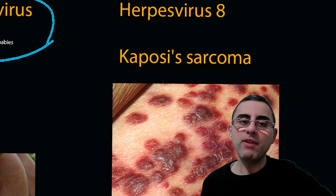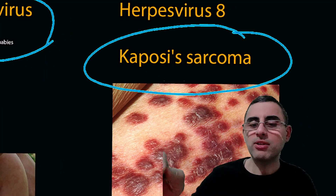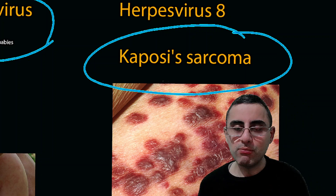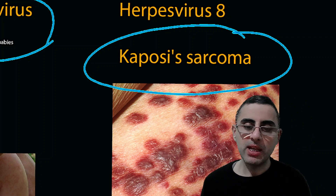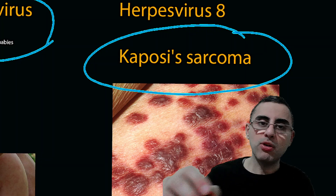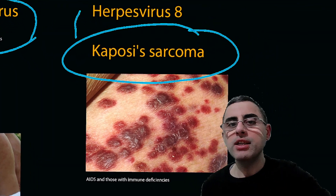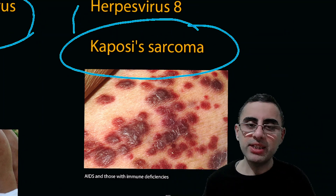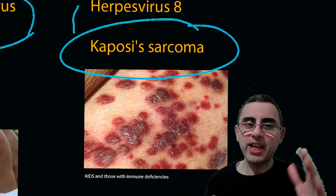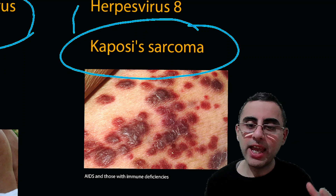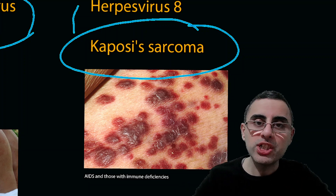The eighth is herpes virus 8, which causes Kaposi sarcoma. Kaposi sarcoma is important for people with a weakened immune system or AIDS, because it is a cancer. If a person has a normal immune system, it usually does not cause any problem. But if a person has a weakened immune system, it causes Kaposi sarcoma.